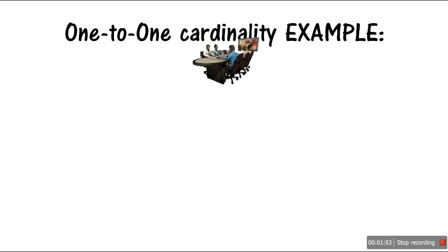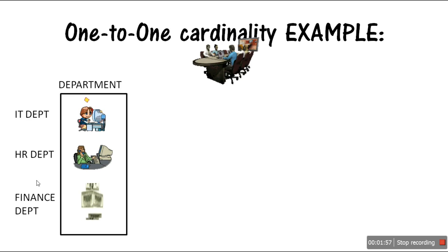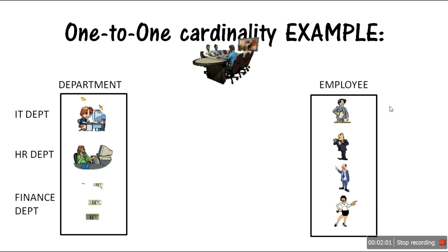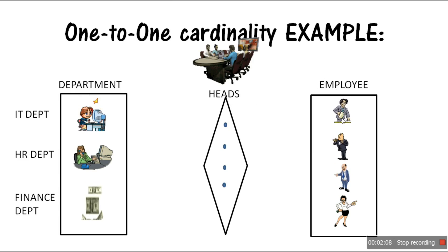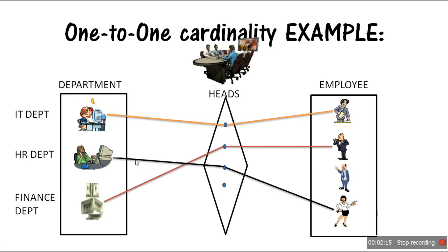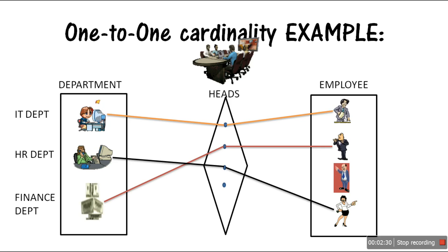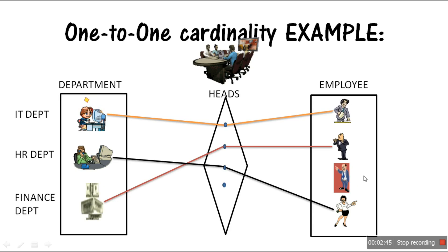Let's say we have a company with multiple departments — IT, HR, and Finance — and different employees. Each department has a head: one person is head of IT, another is head of Finance, and another is head of HR. There's also an employee who is not head of any department. This illustrates the definition: one entity can be related to maximum only one other entity.